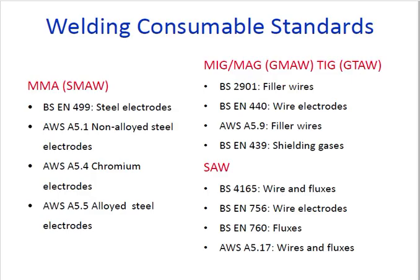Welding consumable standards: for MMA, BSen 499 and AWS A5.1 are for non-alloy steel electrodes. AWS A5.4 is for chromium electrodes. AWS A5.5 is for low-alloy steel electrodes. For MIG/MAG wire, BSen 440 and AWS A5.9 are the filler wire standards. BSen 760 and BSen 756 cover flux. BS 4165 covers shielding gases. You should know these standards and which classification they apply to.